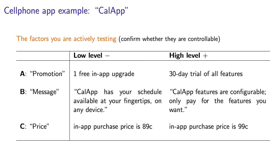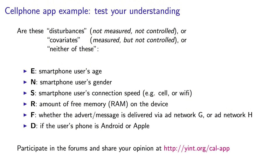So those were the factors. Now consider these other variables. Determine whether they are disturbances or covariates. Note that a variety of answers could be correct, depending on the assumptions you make and on your knowledge regarding the capability of cell phone apps.